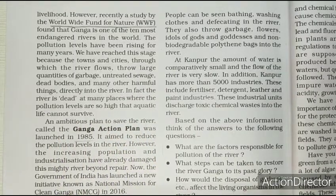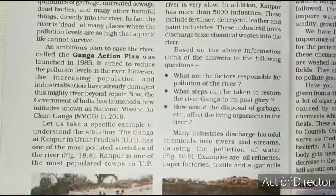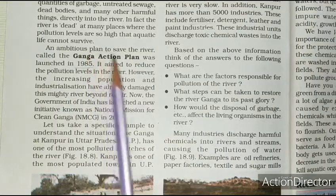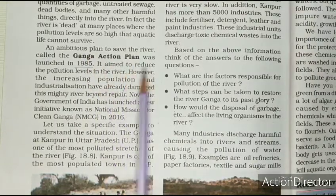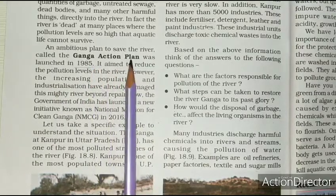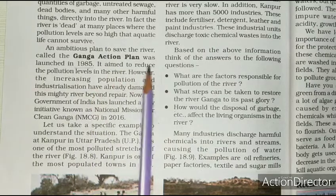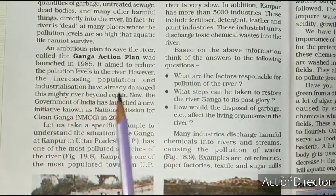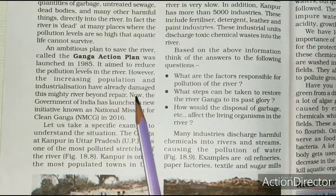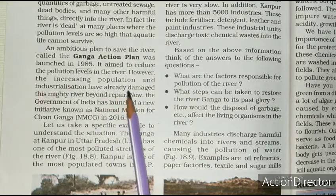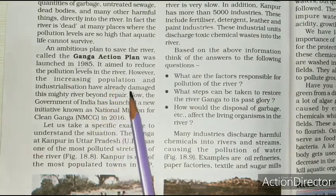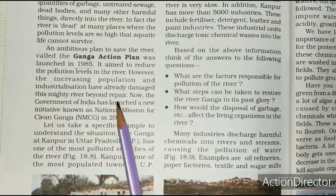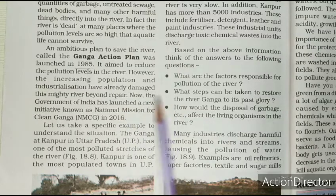Kyunki wahan par koi aquatic organism survive hi nahi kar pata. An ambitious plan to save the river called the Ganga Action Plan was launched in 1985. Jiska main motive bhi yahi tha ki Ganga ko aap kaise save karo. It aimed to reduce the pollution level in the river. However, the increasing population and industrialization have already damaged this mighty river beyond repair.